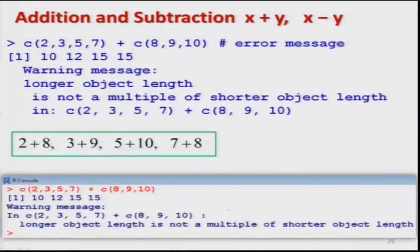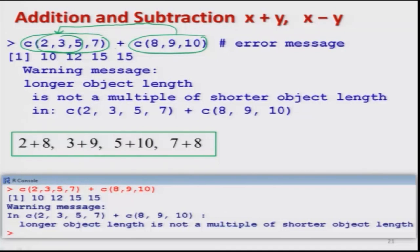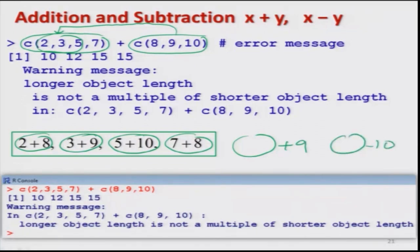If I take a vector of size 4 and add a vector of size 3, again the lengths are not multiples of each other, so a warning is generated. The 3 values 8, 9, and 10 are added to the first three values 2, 3, and 5. For the fourth element 7, it is added to 8 only — there is no value for positions corresponding to 9 and 10. So the warning is generated. Be careful when working with vectors of incompatible lengths.